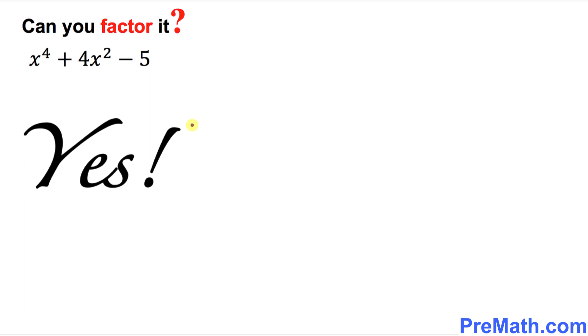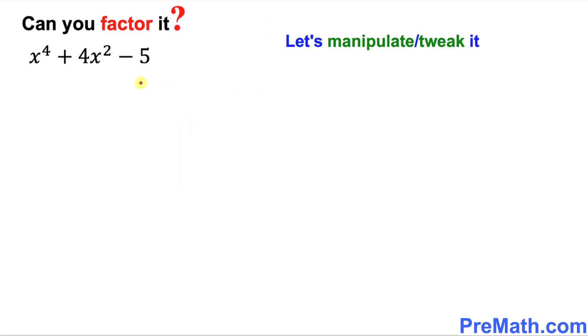Now let me show you how we are going to proceed. In order to factor this given polynomial, we need to tweak it a little bit. We are going to manipulate it by just simply adding 4 and subtracting 4. As you can see, if you add and subtract 4, it's like you are adding a 0. It doesn't make any difference.